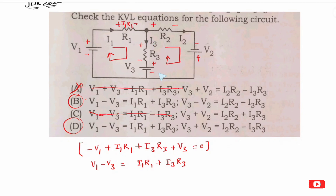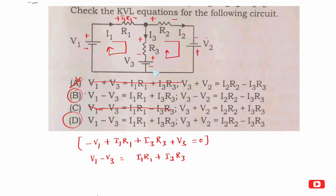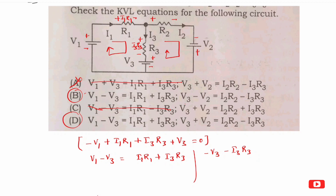If you don't have the correct current direction, you will be confused. You will follow this sign convention. If you don't travel in the right direction, you will enter here confused. If you take minus I3R3 — because you must check: is the current flowing with or against the notation? So it's plus I or minus I. You will get the correct current direction.